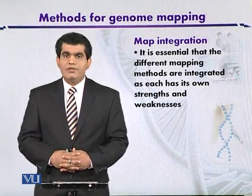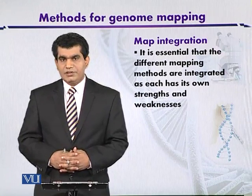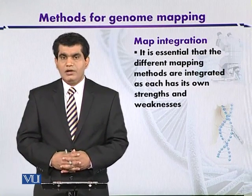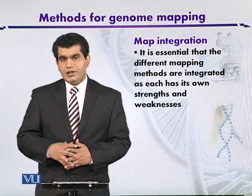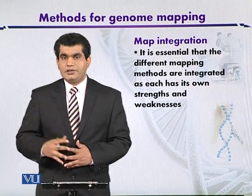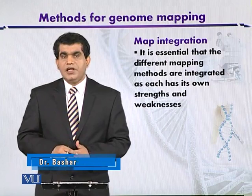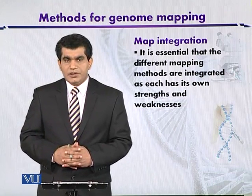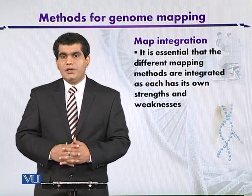Map integration: we have discussed different techniques used for the mapping of the genome, including what mapping is and its different types — linkage mapping and physical mapping — and the basic differences between them. These techniques allow us to move along the chromosome to find the location of other genes or sequences. This activity of mapping is supported by a variety of methods.